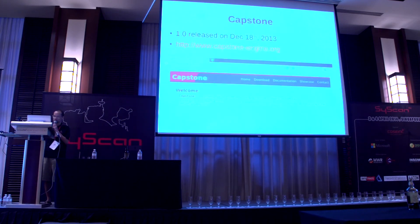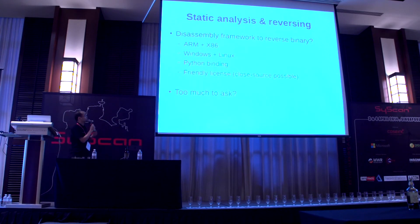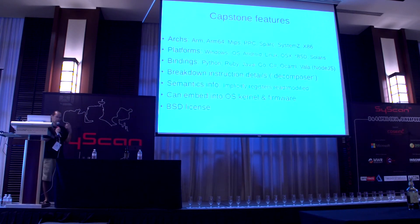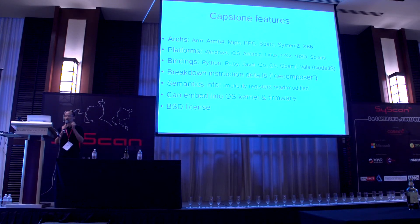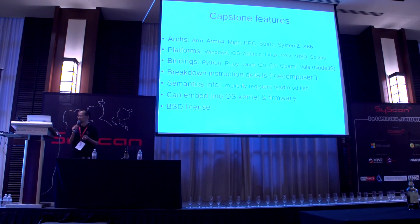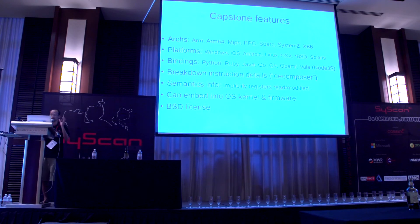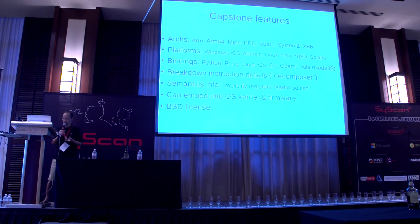Here are the original requirements for the disassembly framework: x86, Windows, Linux, Python bindings, and a friendly license. But my framework, named Capstone, can do a lot more than that. It supports seven architectures so far, works on all platforms including iOS and Android, and has seven language bindings including Go — you need to thank Ben for that. It can break down instructions into details, which is called decomposition by some other frameworks, and can give you semantic information including implicit registers read and modified by instructions. You can embed it inside an OS kernel or firmware, and it has a BSD license.